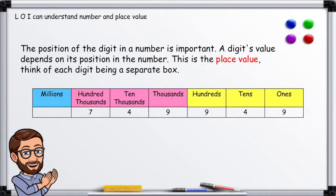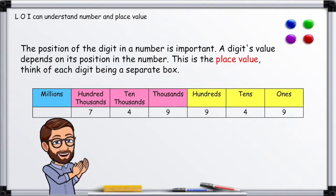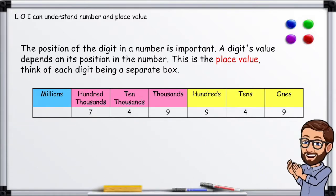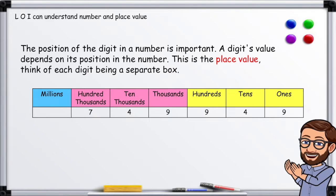The position of a digit in a number is important. A digit's value depends on its position in the number. This is the place value. Think of each digit being in a separate box. Each box is worth 10 times more than the one to the right.